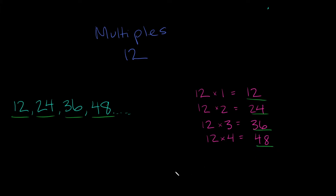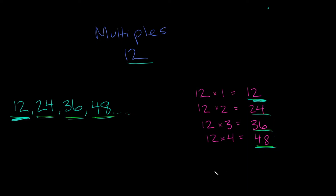So all of these — 12, 24, 36, 48 — are multiples of twelve. In some cases they're equal to twelve, which is what we started with. But the rest of the numbers are going to be bigger than what we started with: twenty-four, thirty-six, forty-eight are all bigger than twelve.